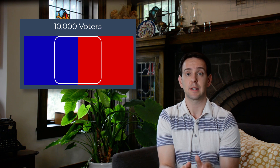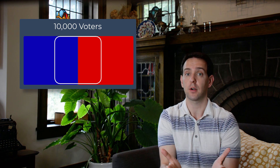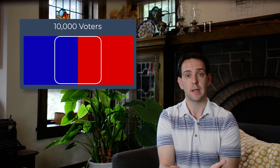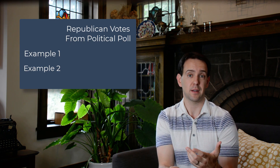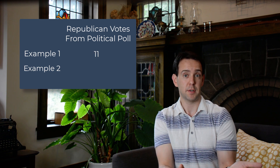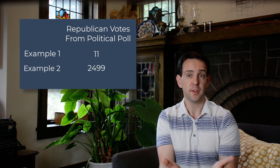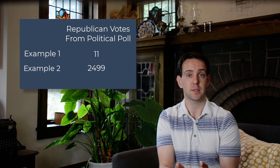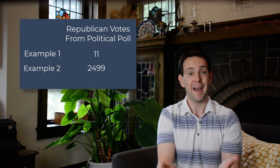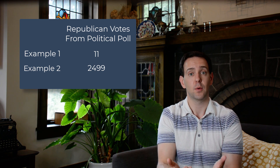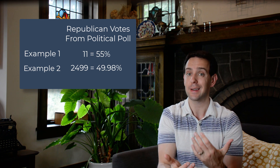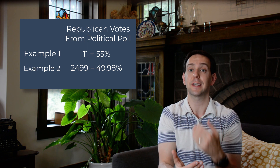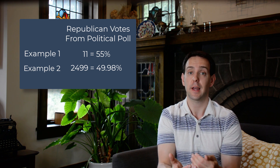One extra thing to point out is that the absolute number of votes in our sample really doesn't matter at all. What matters is the percentage of people saying they'll vote for each candidate. We don't think that the Republican candidate will only get 11 votes in the first example but 2,499 in the second example — we hopefully realize that the absolute number in our sample doesn't matter. What matters is how many votes the Republican candidate will get relative to the Democrat in the entire population. For predicting who will win an election, we only care about the percentage of votes for each candidate, not just how many there are in total.